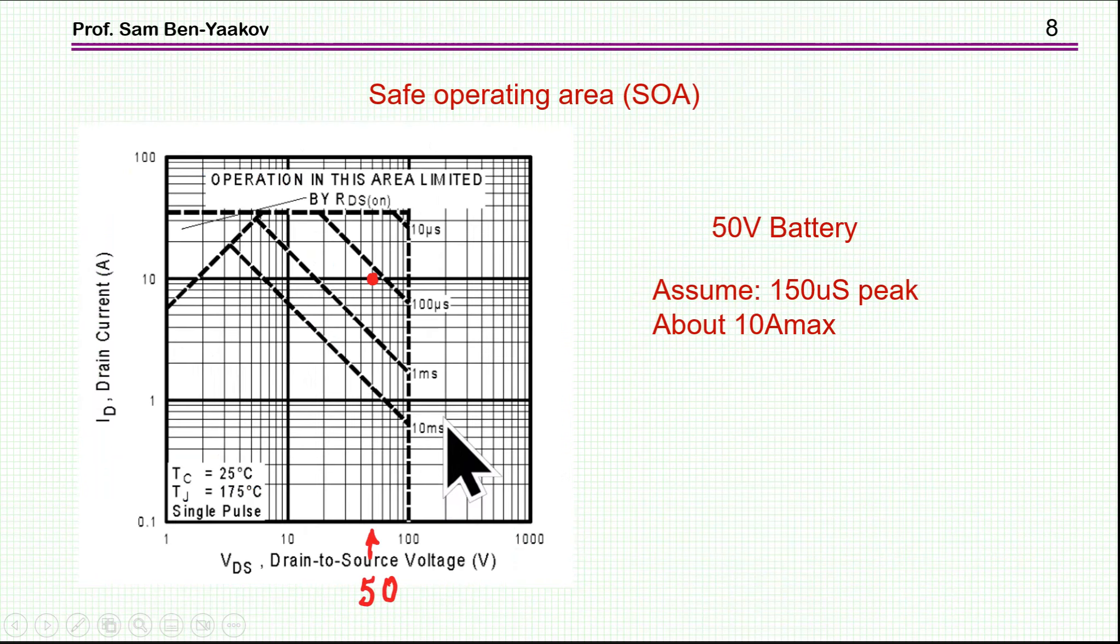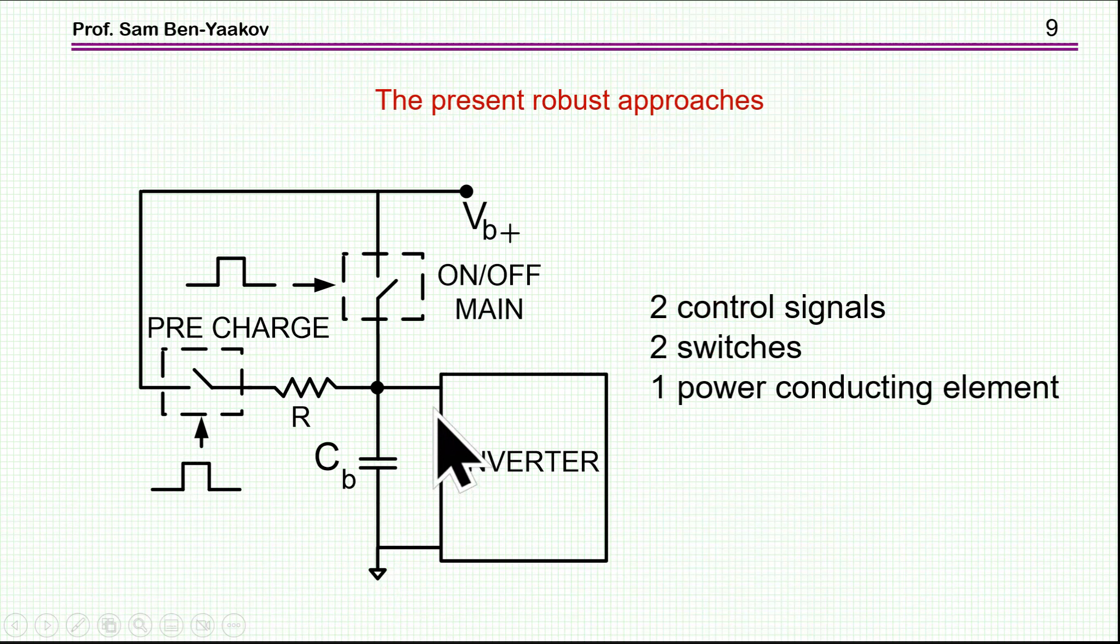So then in this particular case, for this particular transistor, the maximum current could be like 10 amperes. So there is also a problem of safe operating area. So in general, however, we might say that the conventional approach needs two switches and a power element to pass the current during the charging.